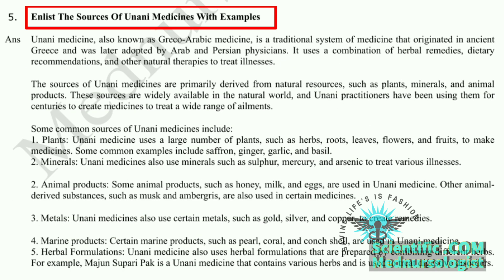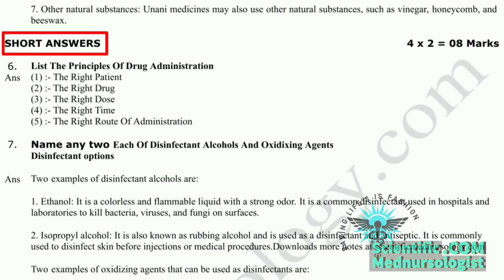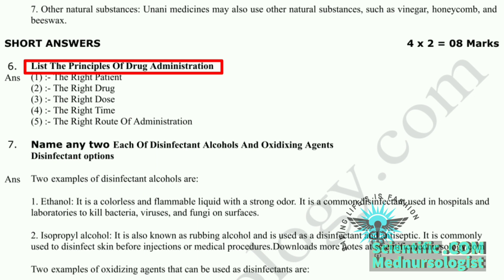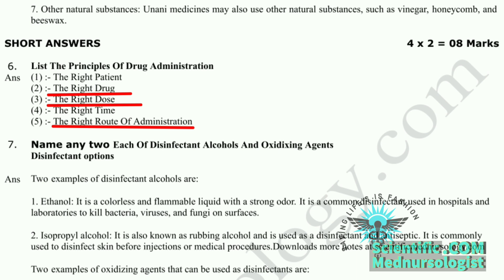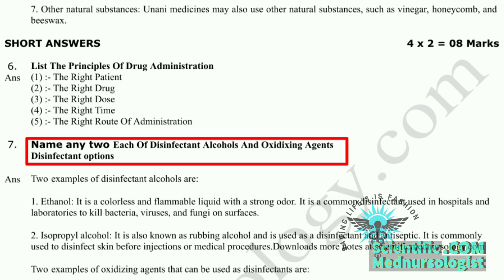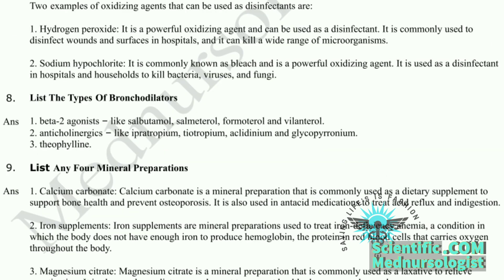The next question asks to enlist sources of learning about medicines with examples. Moving to the short answers section: first question on principles of drug administration — the principles include the right patient, the right drug, the right dose, the right time, and the right route of administration. The next question asks to mention two each of oxidizing agents and disinfectants — answers include: hydrogen peroxide, benzoyl peroxide, chlorine, and potassium permanganate.